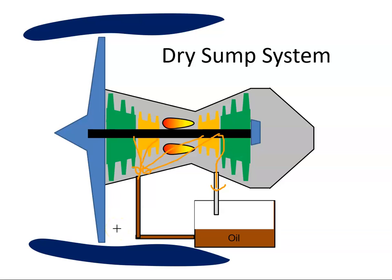So a wet sump system, the sump is integral part of the engine, and a dry sump system, the tank is external to the engine.